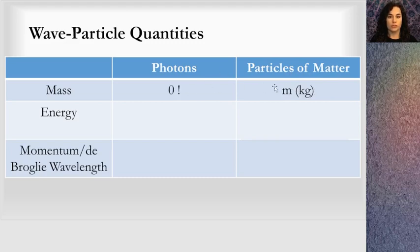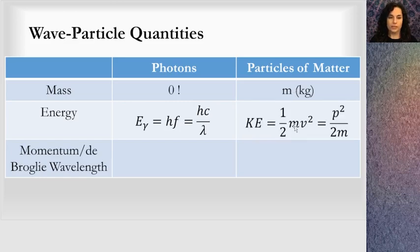The energy of photons, we've covered already, HF or HC over lambda. You've used that before. That's a very nice and elegant equation. Particles of matter do not follow this equation. I know you're going to want to use this equation on matter, but you cannot. They're not the same. Photons don't have mass, so their energy is not based in mass. Particles of matter do have energy based in mass. And so that's where we're going to relate it to the kinetic energy. You cannot talk about the kinetic energy of a photon. You can only talk about kinetic energy of a particle.